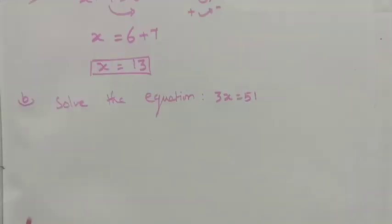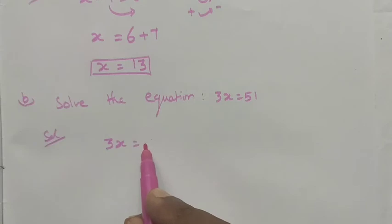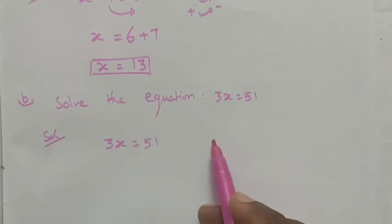Next, Part B: Solve the equation 3x equals 51. For this solution, we also use the transposition method. When transposing multiplication and division, multiplication becomes division.